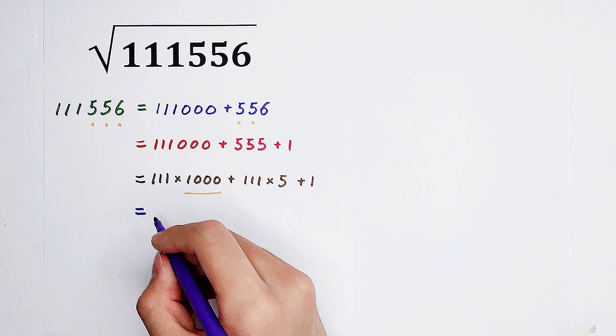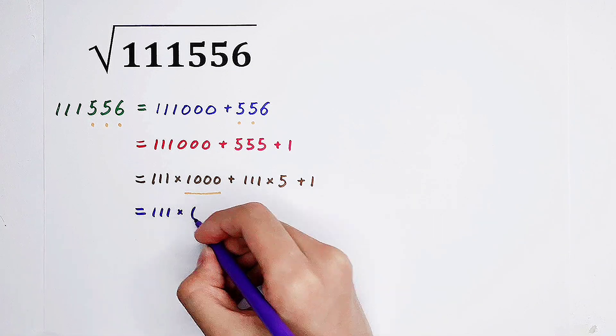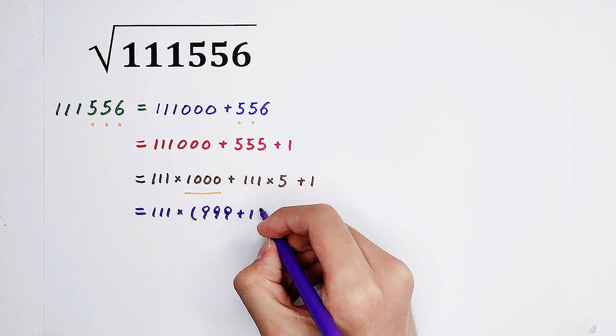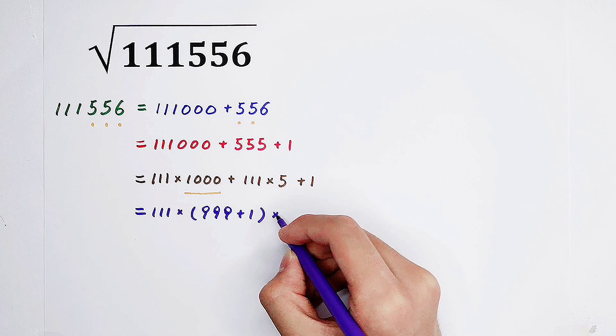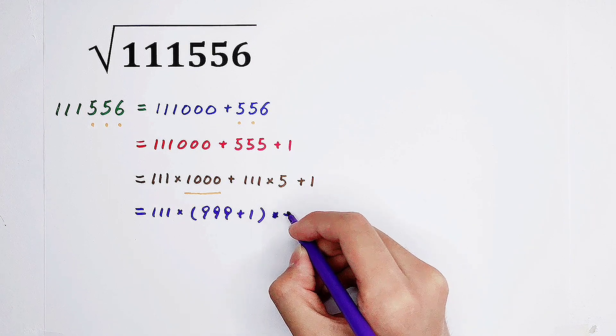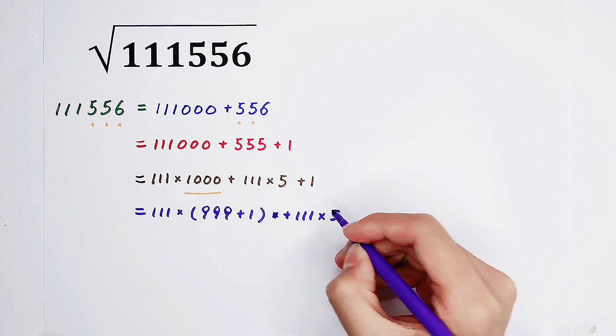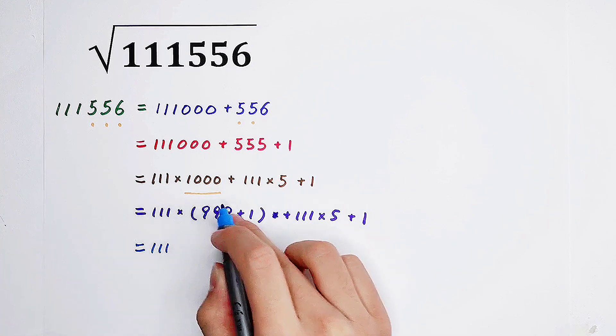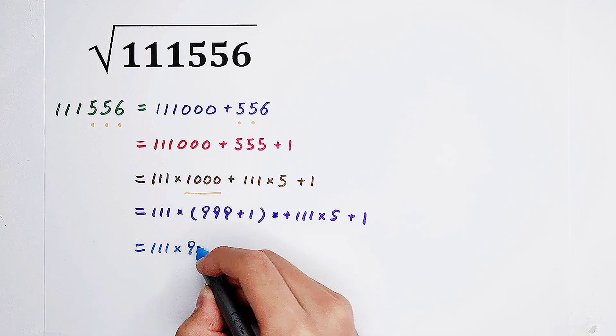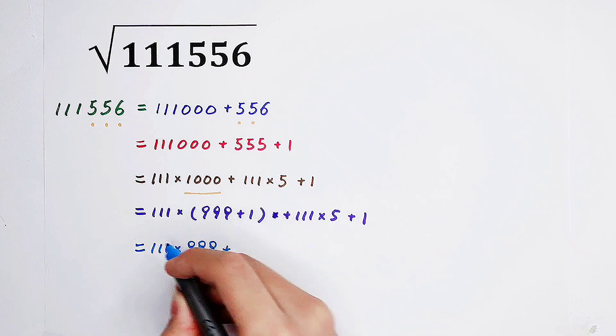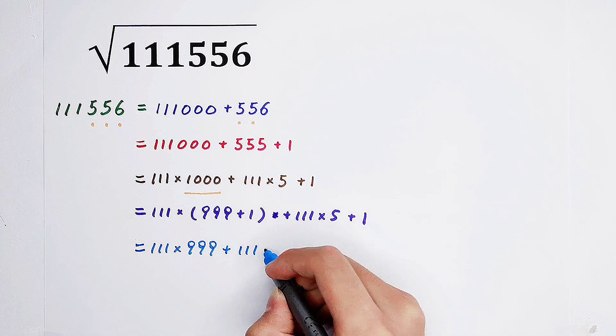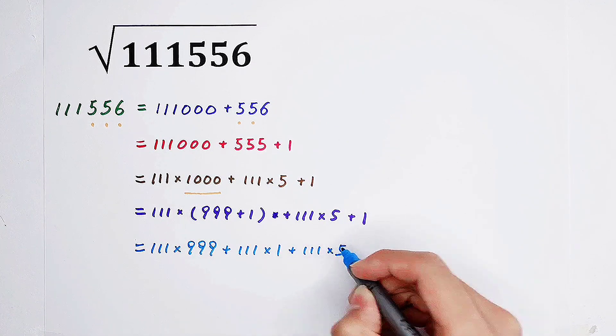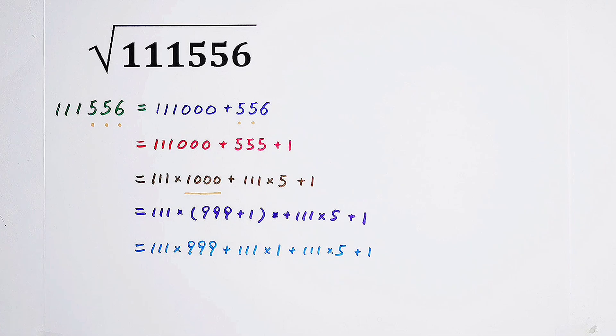So then, 111, then times, it can be written as 999 plus 1, and then plus. 111, then times 999, and then plus. Here is 111 times 1. Here is 111 times 5, and then plus 1.